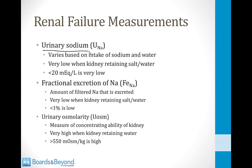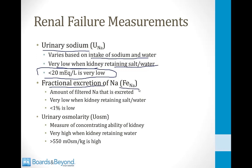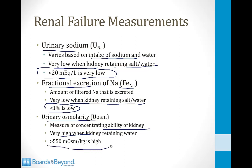Urinary sodium varies based on intake but gets very low (less than 20 mEq/L) when the kidneys retain salt and water. The FENA — the fraction of filtered sodium that gets excreted — also gets very low (less than 1%) when kidneys retain salt and water. Urinary osmolarity measures concentrating ability and gets very high (greater than 550 mOsm/kg) when the kidneys are retaining water.